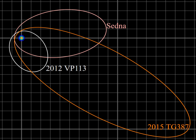Sednoids might constitute a proper dynamical class, but they may have a heterogeneous origin. The spectral slopes of 474640-2004 VN112, 2013 RF98, 2012 VP113, 2002 GB32, and 2003 HB57 are very different from that of 90,377 Sedna.